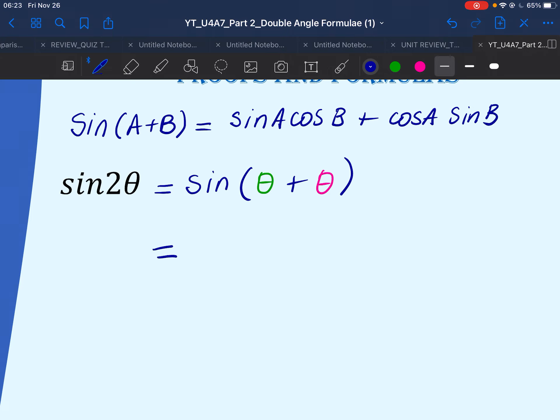then proving sine of 2 theta is very easy. So we have sine theta cos theta plus cos theta sine theta.